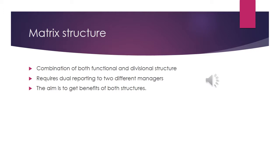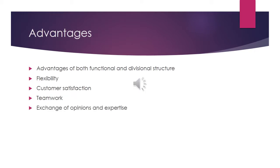Matrix structure is a combination of both functional and divisional structure, which is why it requires dual reporting to two different managers. For example, an employee manufacturing product X will have to report to the production department and also to the manager in charge of product X. The aim is to get the benefits of both structures.